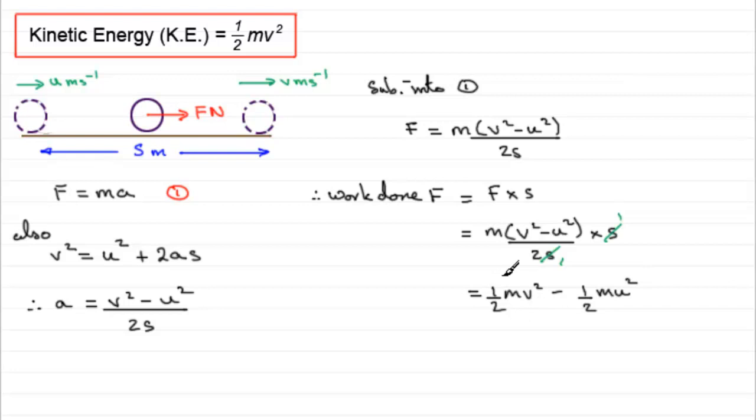And this quantity here is the final kinetic energy of the particle, and minus a half mu squared is the initial kinetic energy. So we end up with a result that you need to remember: the work done by a resultant force f on a particle is equal to the change in kinetic energy.